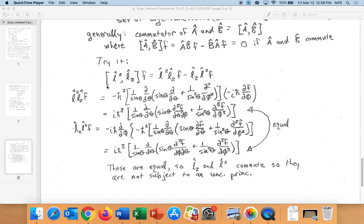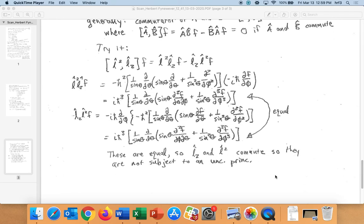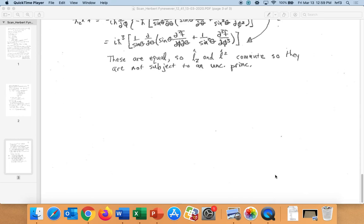So let's take a look. So here's the commutator of these two operators on f. You can write it out, you can do all this math, and lo and behold, these two things end up being equal. And because they're equal, L̂z and L̂² commute, so they are not subject to the uncertainty principle.